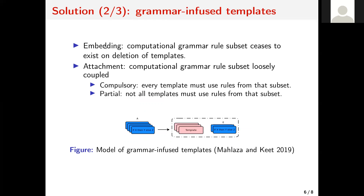Embedding is an example of an existential dependency, where if you were to delete the templates, it also deletes the rules. On the other hand, you have a functional dependency between the attached templates and the rules, where even if you were to delete these ones, the rules do not get deleted — you simply reuse them within those templates. If people are interested in the details, they can find this paper from last year, and I will put the slides on the website as well.